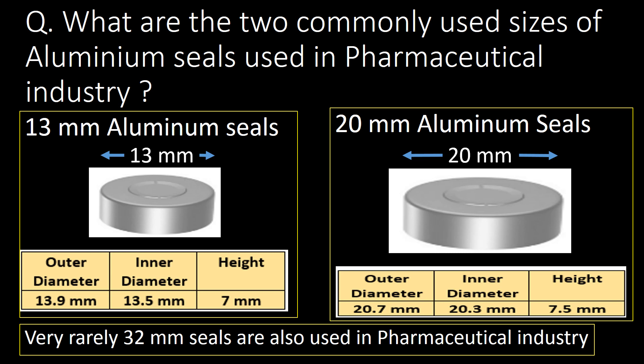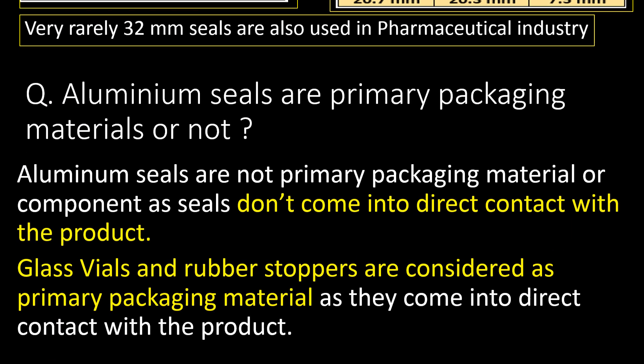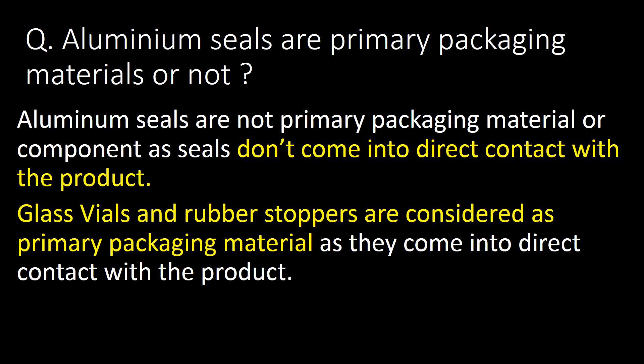Very rarely, 32mm seals are also used in the pharmaceutical industry. Are aluminum seals primary packaging materials? No — aluminum seals are not primary packaging materials, as they don't come into direct contact with the product. Glass vials and rubber stoppers are considered primary packaging materials as they come into direct contact with the product.